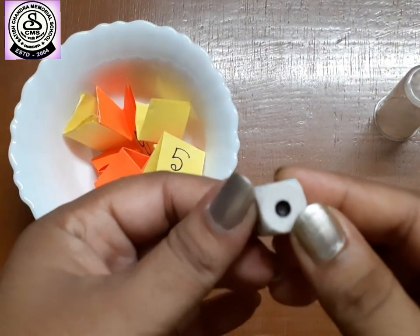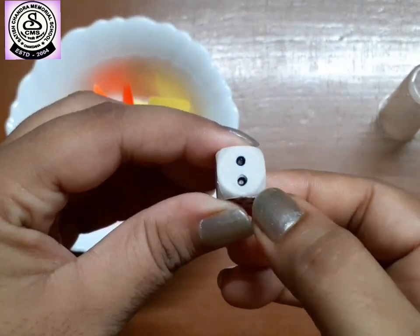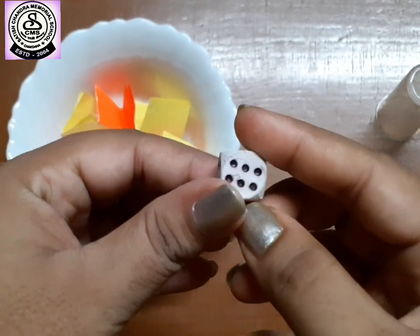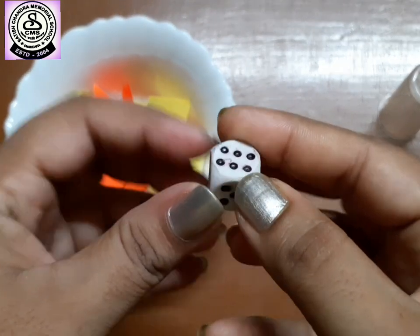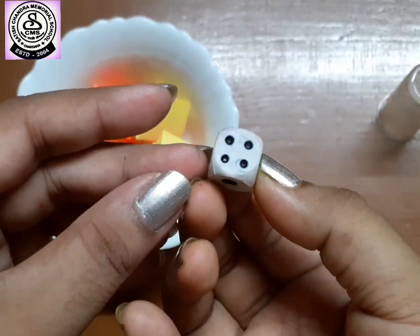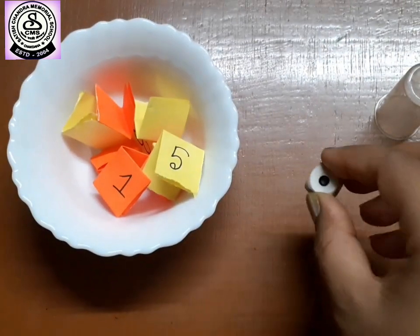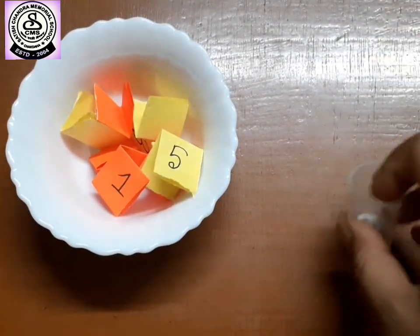Now see, here we have number one. Here we have two. Here we have six. Here we have five, three and four. So, this is about dice. In a dice, we can find numbers up to six.